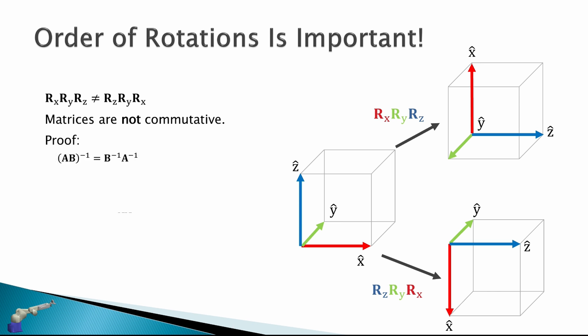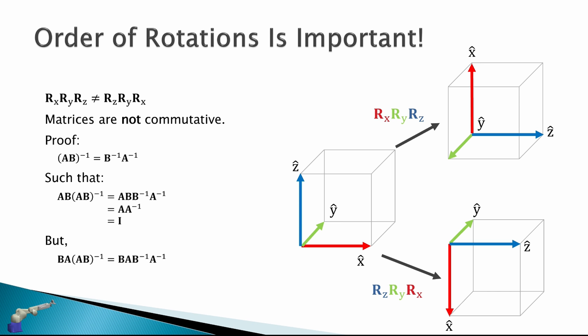We can prove non-commutativity easily. The inverse of AB is the inverse of B times the inverse of A. Multiplying AB by the inverse of AB gives A·B·B⁻¹·A⁻¹, which reduces to the identity matrix. But if we take B·A multiplied by the inverse of AB, the matrices do not cancel out — it is not the identity. Therefore A·B ≠ B·A. Rotation matrices are still matrices and these rules apply.